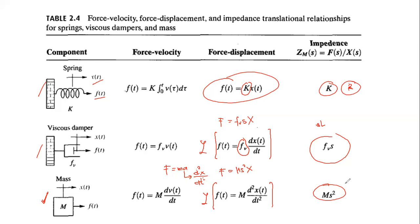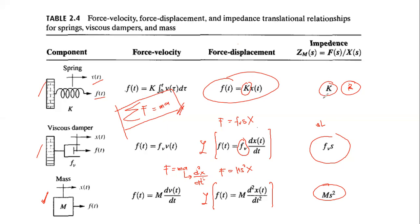In analyzing the translational mechanical system, we use Newton's second law: the summation of all forces on a given body equals mass multiplied by acceleration. We will use the derived impedances directly — for the spring: k; for the viscous damper: Fv·s; and for the mass: m·s². This way we don't need to take the Laplace transform of each element separately.